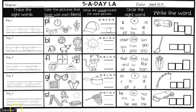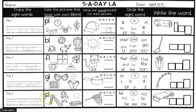Day five. The sight word is A-L-L — 'all' — trace it three times in your best handwriting. Color the two pictures that begin with the blend S-L. We have a slide, astronaut, star, and sled. Slide and sled start with S-L.